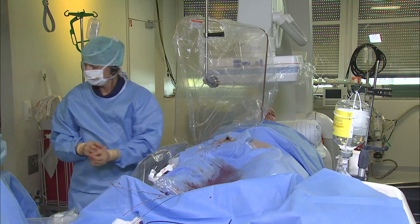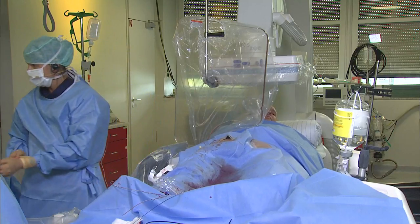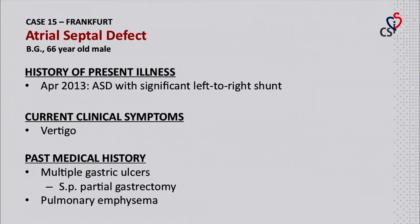Our next patient is a 66-year-old male. He was diagnosed with an arterial septal defect with significant left-to-right shunt in April 2013. He presented with symptoms of vertigo. His concomitant diseases are pulmonary emphysema as well as multiple gastric ulcers, which were treated by partial gastrectomy.